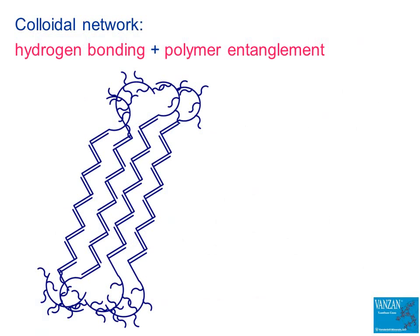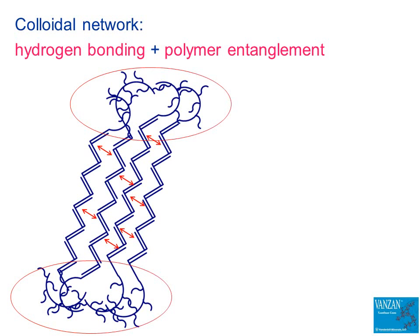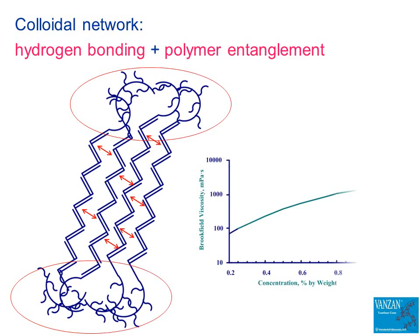With electrolyte present, a colloidal network forms based on hydrogen bonding among the helical rods and limited polymer entanglement. Concentrations as low as a tenth of a percent can provide significant viscosity, while concentrations greater than 1% by weight can produce very high viscosity and gel-like consistency.